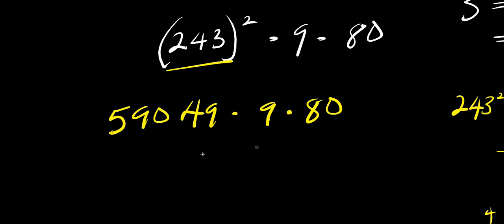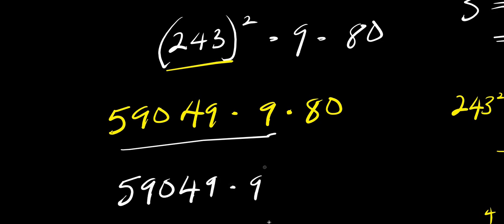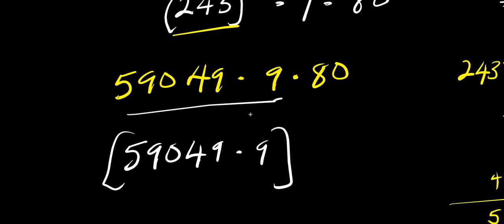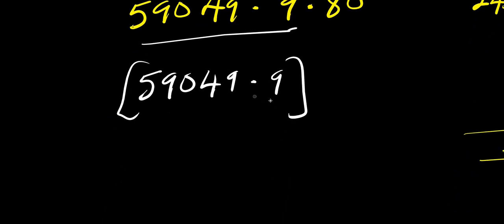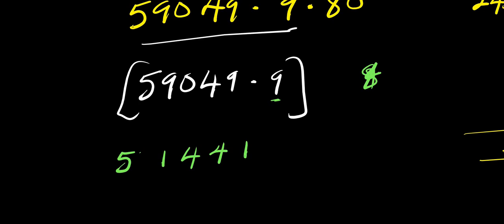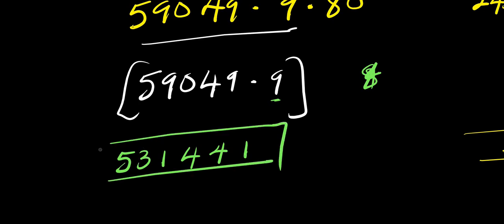From here we multiply these out. First, fifty-nine thousand four hundred and forty-nine times nine. Working through the multiplication: nine times nine is eighty-one, nine times four is thirty-six plus eight gives forty-four, nine times four again gives thirty-two plus four gives thirty-six, nine times nine gives eighty-one plus three gives eighty-four, nine times five is forty-five plus eight gives fifty-three. The result is five hundred and thirty-one thousand four hundred and forty-one.